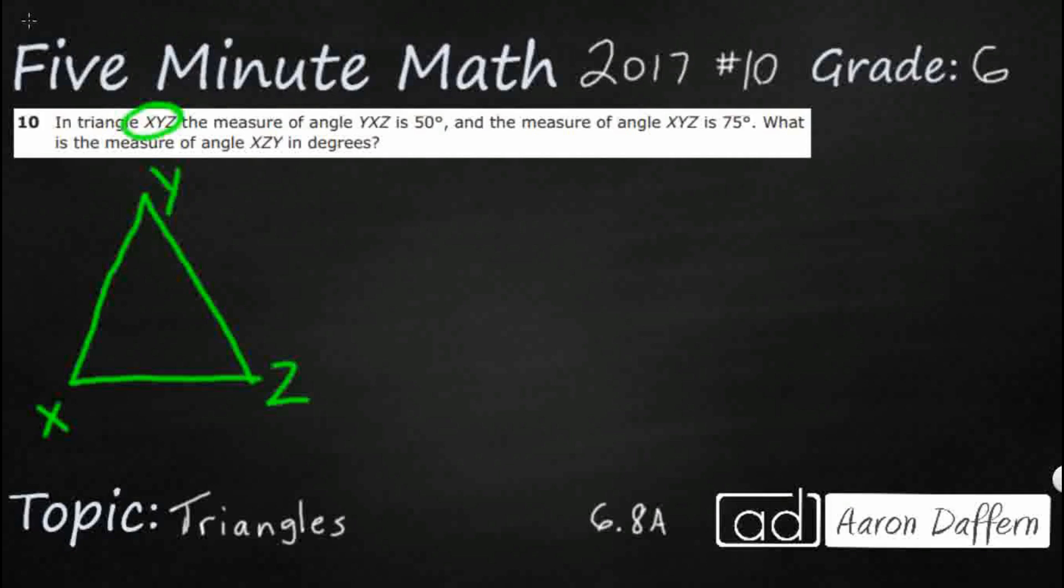And it says the measure of angle YXZ. Now this is important right here. It's that middle letter, Y, X, Z. That gives you the actual angle you're looking for. So Y, X, Z. Look at that middle. So that's an angle of 50. So Y, X, Z has got a measure of 50 degrees.